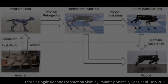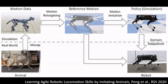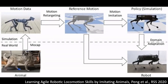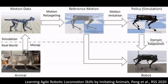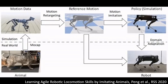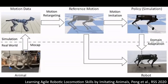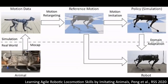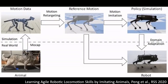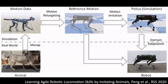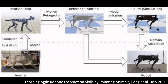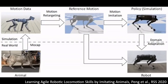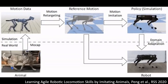Previous methods for transferring animal behaviors to robots rely on imitating precise reference motions, typically extracted from animals with similar morphologies to the robot and captured in controlled lab settings. This approach doesn't scale to vast and diverse internet datasets.